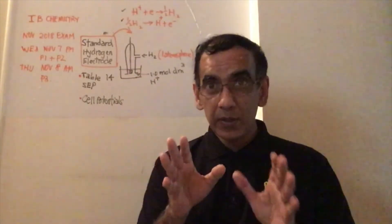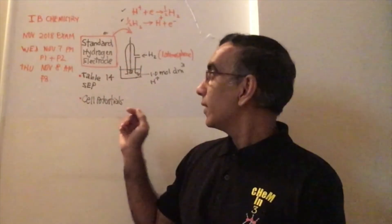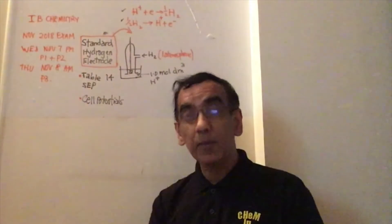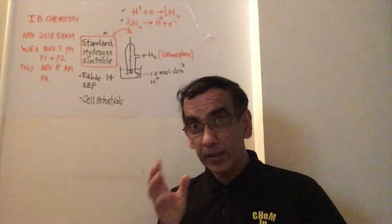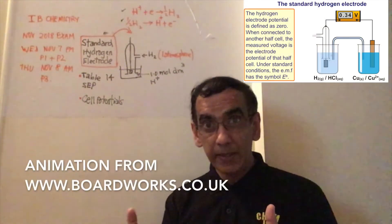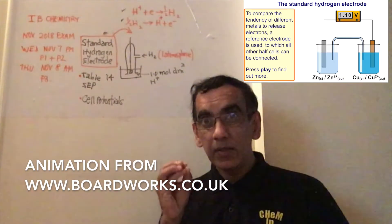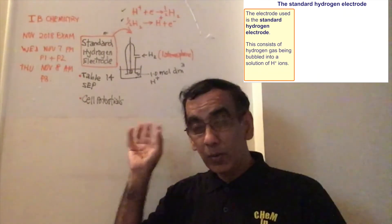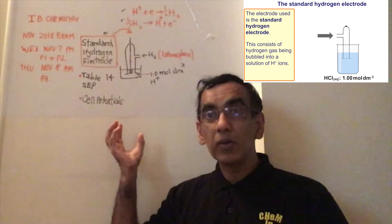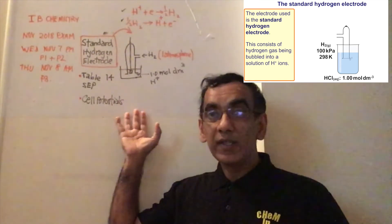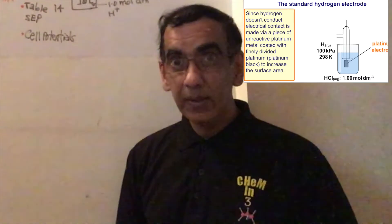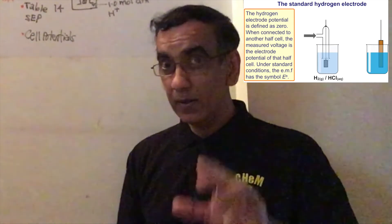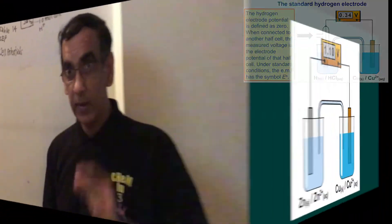Today's episode focuses specifically on standard electrode potential — the table of standard electrode potentials as given in the IB data booklet. I want you to note the makeup of the standard hydrogen electrode. Most students have no problem recalling the makeup of the electrode, but one area of concern is that students do not appreciate that the standard hydrogen electrode is designed so that it can undergo both oxidation or reduction depending upon what it's connected to.